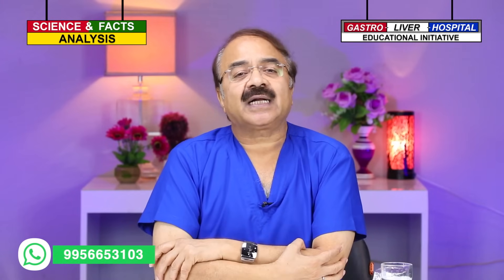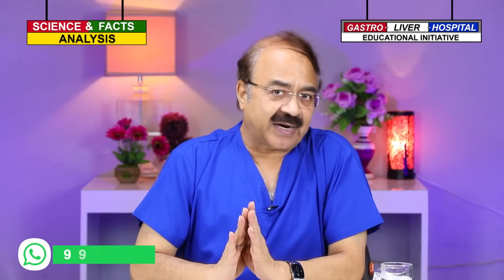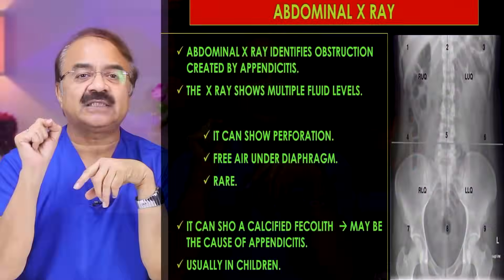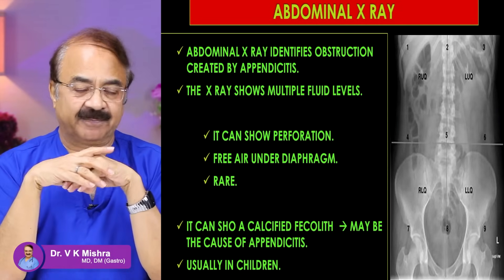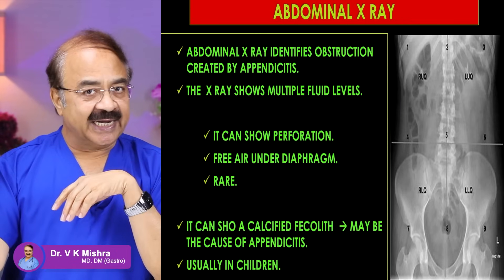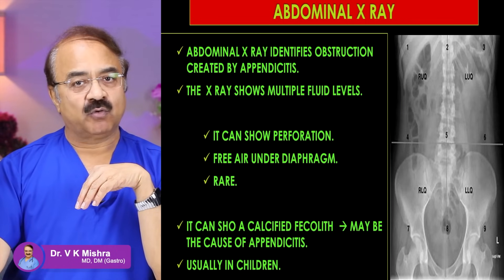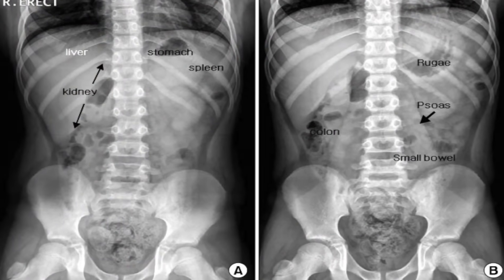Number 3 पर हम conduct करते हैं plain X-ray abdomen - बिल्कुल सामने standing position में। जो abdominal X-ray है वो तीन information देता है। Number 1: अगर appendicitis के चलते intestine में obstruction हो गया है, तो multiple fluid levels दिखाई देने लगते हैं। अगर multiple fluid levels दिखाई दे रहे हैं तो यह clear हो जाता है कि intestinal obstruction है और यह appendix ने किया हुआ है।